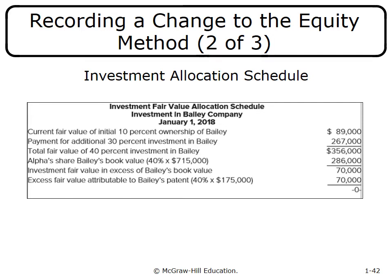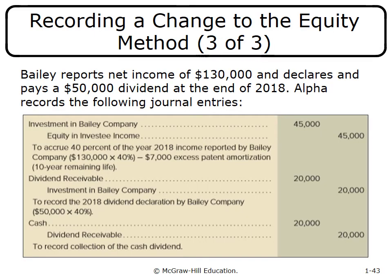At year-end, Alpha debits Investment in Bailey and credits Equity in Investee Income for $45,000—representing 40% of Bailey's net income less $7,000 of patent amortization. Bailey declares $50,000 in total dividends, so Alpha's 40% share is $20,000: debit Dividend Receivable $20,000, credit Investment in Bailey Company $20,000. When the dividend is received, debit Cash and credit Dividend Receivable.